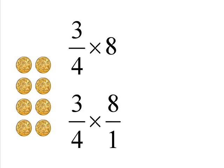What you do is you put the eight over one. And, again, what you end up doing is you just multiply these guys out. So, three times eight is twenty-four. Four times one is four. So, twenty-four divided by four, and our answer is six.